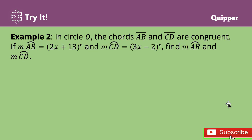Example number two: in circle O, the chords line segment AB and line segment CD are congruent. If the measure of arc AB is equal to 2x plus 13 degrees and the measure of arc CD is equal to 3x minus 2 degrees, find the measure of arc AB and arc CD. We want to know the exact value of arc AB and arc CD.